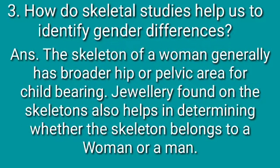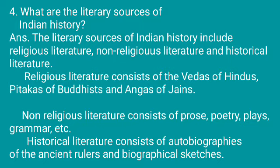Question number 4 — what are the literary sources of Indian history? The literary sources of Indian history include three types: religious literature, non-religious literature, and historical literature. Religious literature consists of the Vedas of Hindus, the Pitakas of Buddhists, and the Angas of Jains.